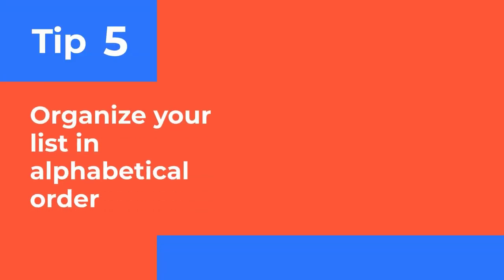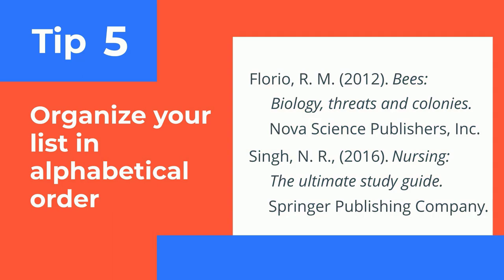Tip 5 – Organize your list in alphabetical order by the first word of the citation. Usually that's the author's last name, but it may be the name of an organization or association in the case of websites.